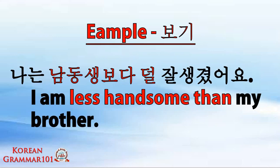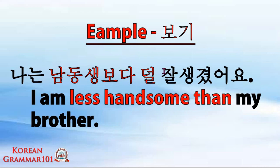Now how about using 덜 (dol)? First example: nanun namdongseng buddha dol chalsenggyusoyo. 'Nanun' or 'jeonun' both mean I. 'Namdongseng' means younger brother. 'Chalsenggyu soyo' means is handsome. 'Dol' means less. So: I am less handsome than my younger brother.